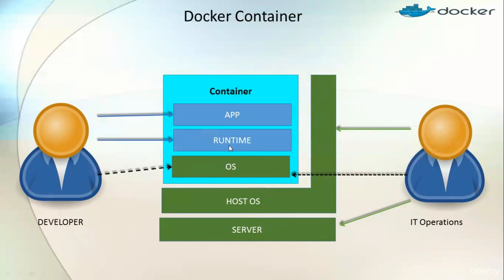On top of the container OS, we have a runtime — a component that allows the container to run applications. This complete daemon running on top of that OS is called the Docker engine. On top of the Docker engine, we have a number of applications. For example, container one has a database, container two has a web server, and container three has middleware. We can create multiple containers for different purposes.